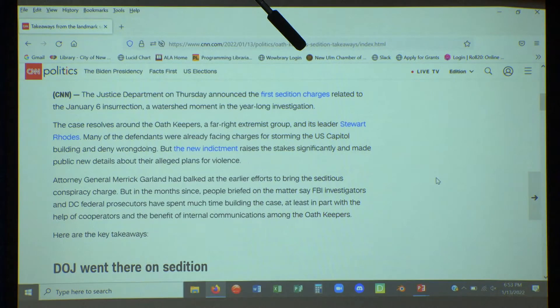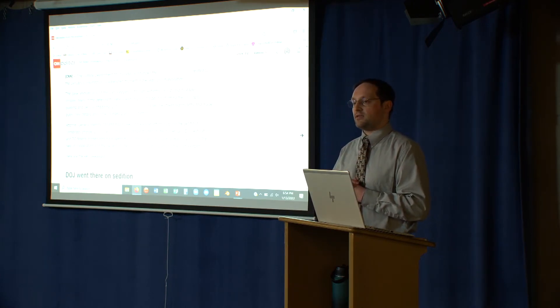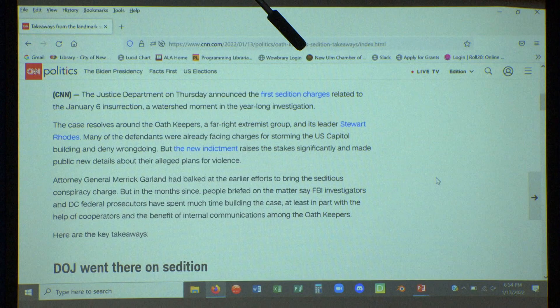The Justice Department on Thursday announced the first sedition charges related to the January 6th insurrection, a watershed moment in the year-long investigation. The case resolves around the Oath Keepers, a far-right extremist group and its leader Stuart Rhodes. Many of the defendants were already facing charges for storming the U.S. Capitol building and deny wrongdoing, but the new indictment raises the stakes significantly and made public new details about their alleged plans for violence. Any fallacies? I spotted three, which just goes to show how easy it is to fall for them.